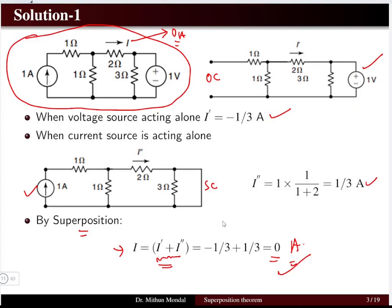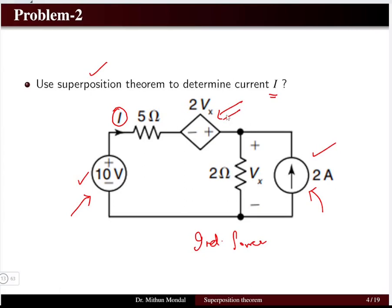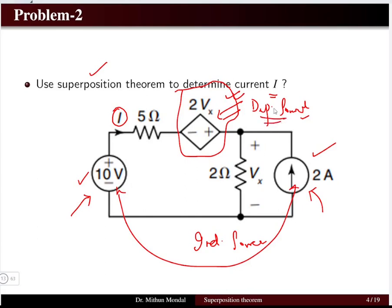Problem 2: determine the current I coming out of the 10 volt source using superposition theorem. Here we have a 10 volt voltage source, a 2 ampere current source, and a dependent voltage source 2Vx. The 10 volt and 2 ampere sources are independent; 2Vx is a dependent source. In superposition theorem you do not touch the dependent source — it remains as it is. You only play around with the two independent sources.